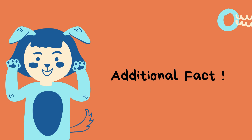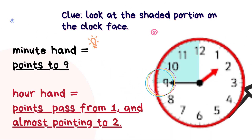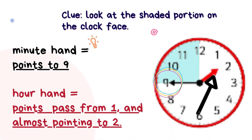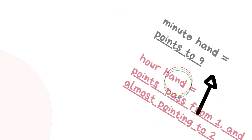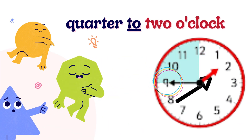Additional facts. Now the minute hand is pointing to number 9. The clue is you need to look at the shaded portion on the clock face — quarter of the clock face. The hour hand points past from number 1 and is almost pointing to number 2. So we say the time of this clock face is quarter to 2 o'clock. Say with me: quarter to 2 o'clock.